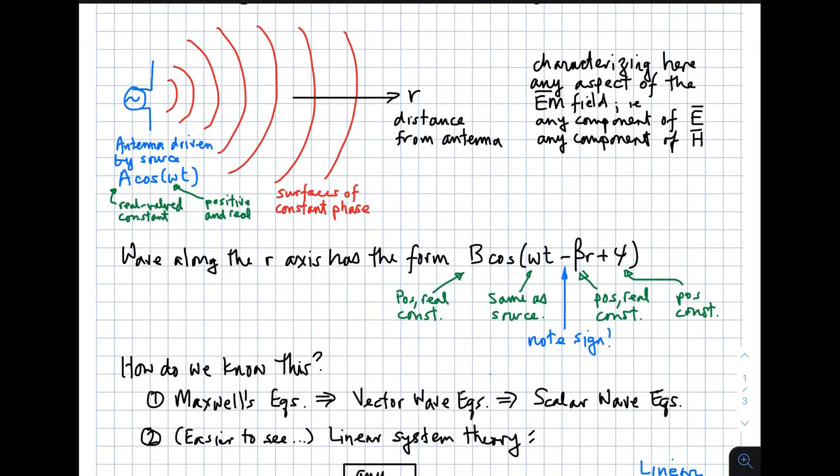Here I'm showing a picture of a wave being generated by an antenna. The antenna is driven by a source, and the source waveform consists of a real-valued constant, capital A, and it's sinusoidal, so cosine function. Omega is positive and real, that's the angular frequency, how many radians per second, and then time. It doesn't matter whether that's a current or a voltage or whatever. This applies in either case.